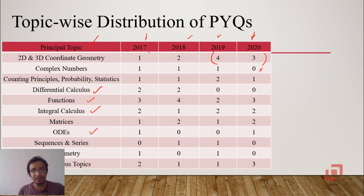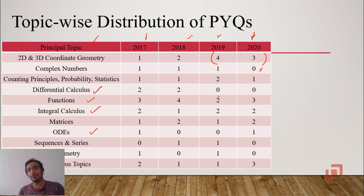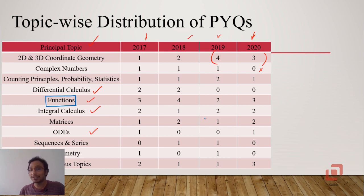In 2017 and 2018 there were two questions each on differential calculus and no questions in 2019 and 2020. This doesn't mean there was not a single question based on derivatives — derivatives were involved, but primarily they were based on functions or the graph of a function. When it comes to functions, it seems this is their favorite topic in the last four years: three questions in 2017, four in 2018, two in 2019, and three in 2020.